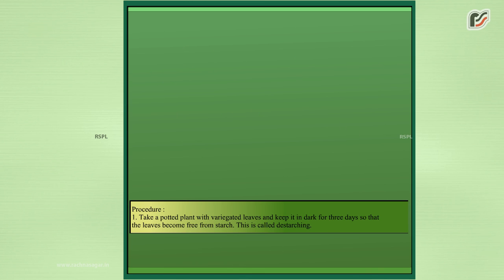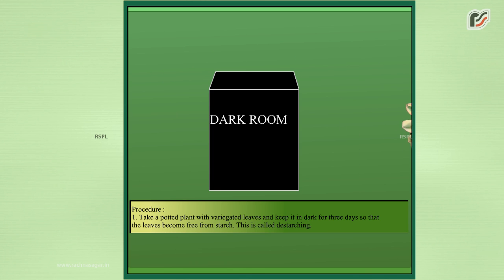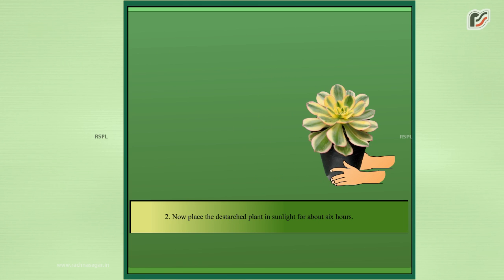Procedure: Take a potted plant with variegated leaves and keep it in dark for 3 days so that the leaves become free from starch. This is called destarching. Now place the destarched plant in sunlight for about 6 hours.